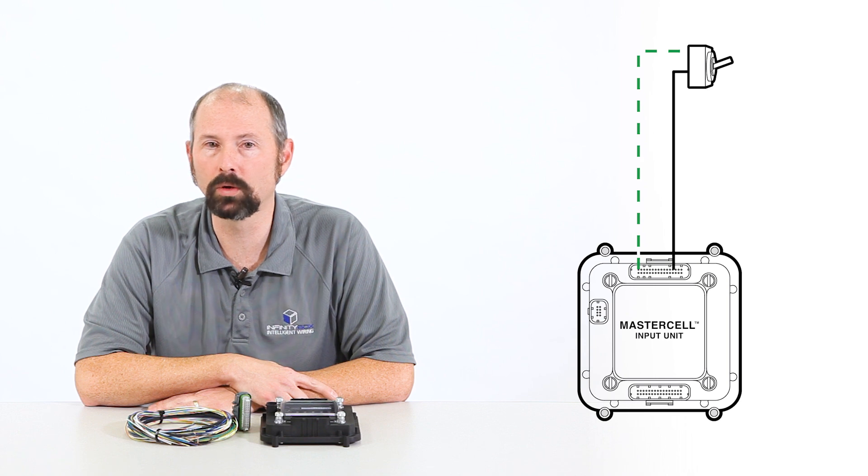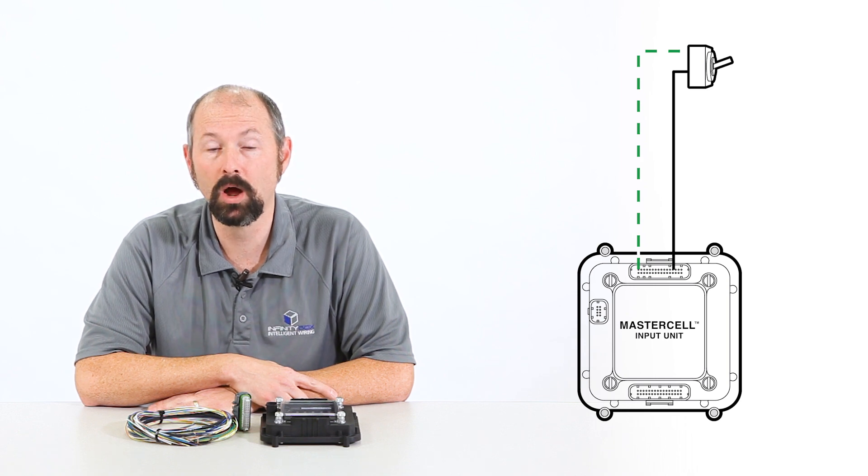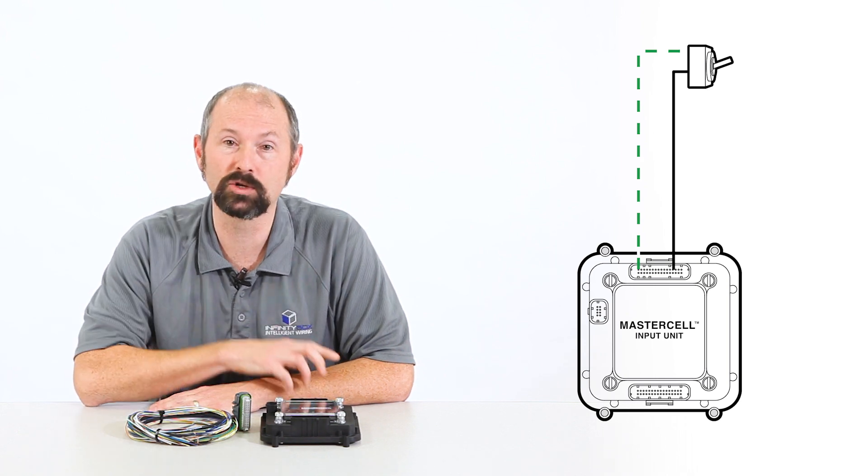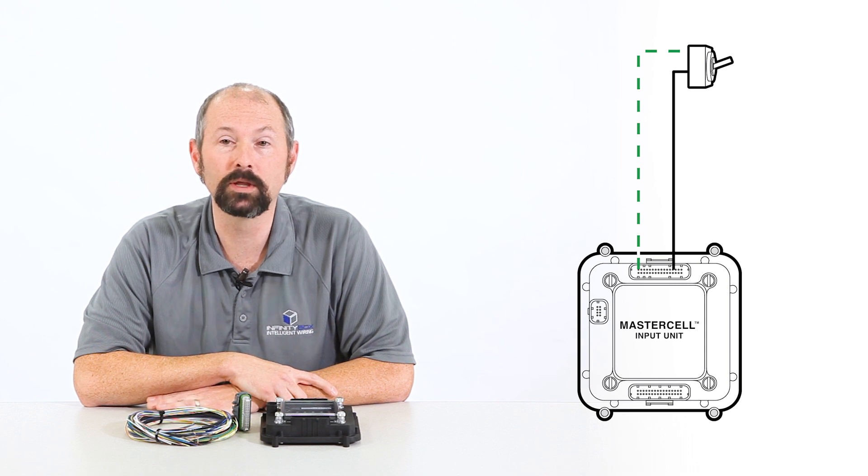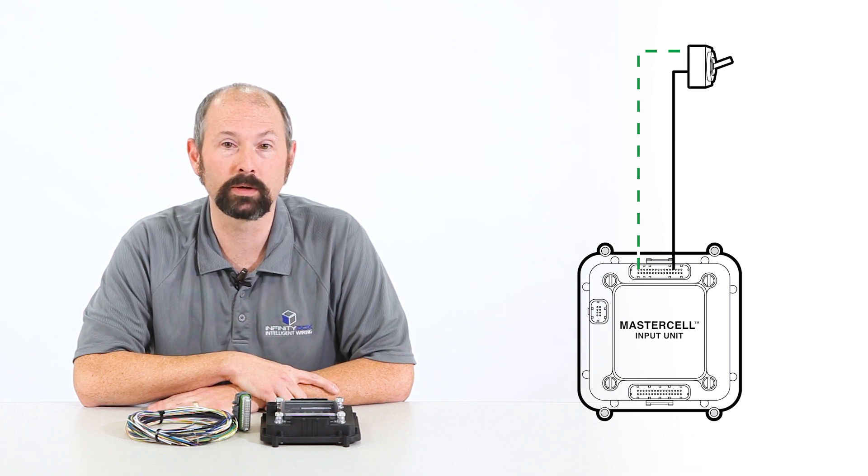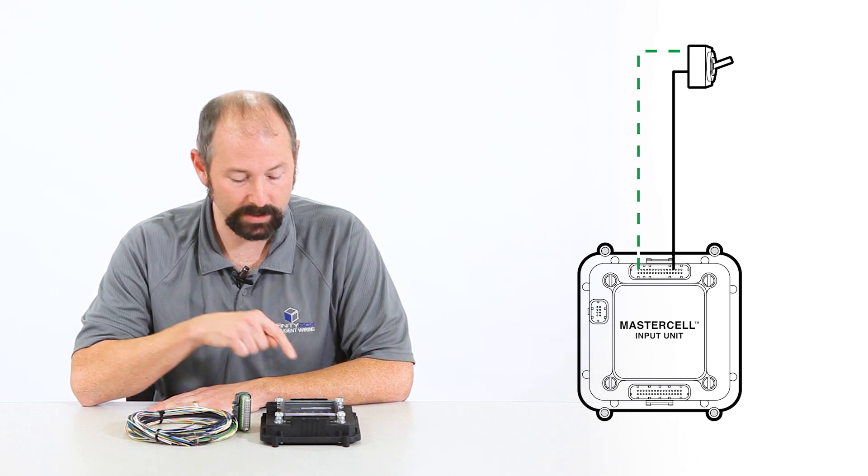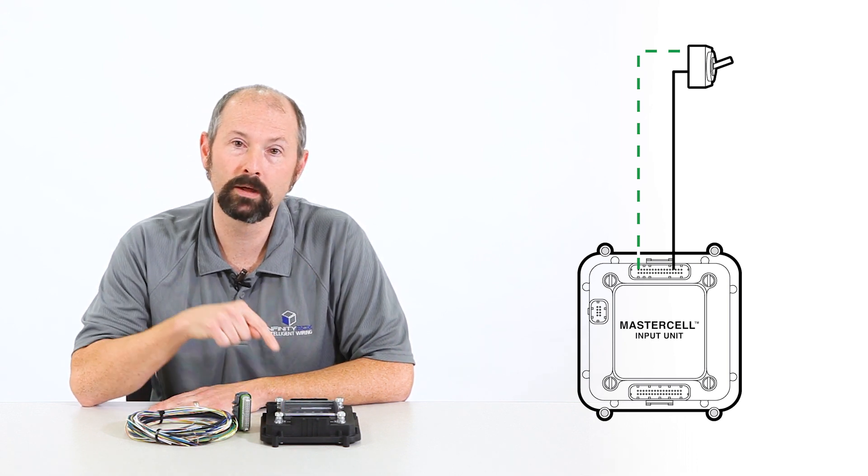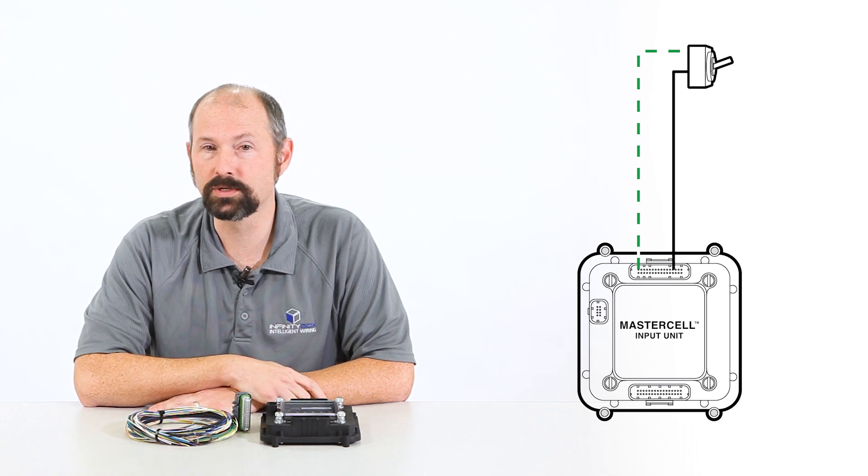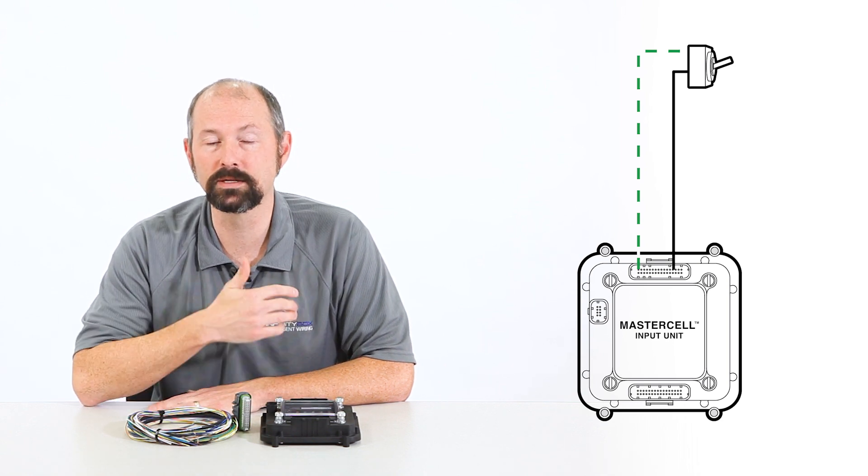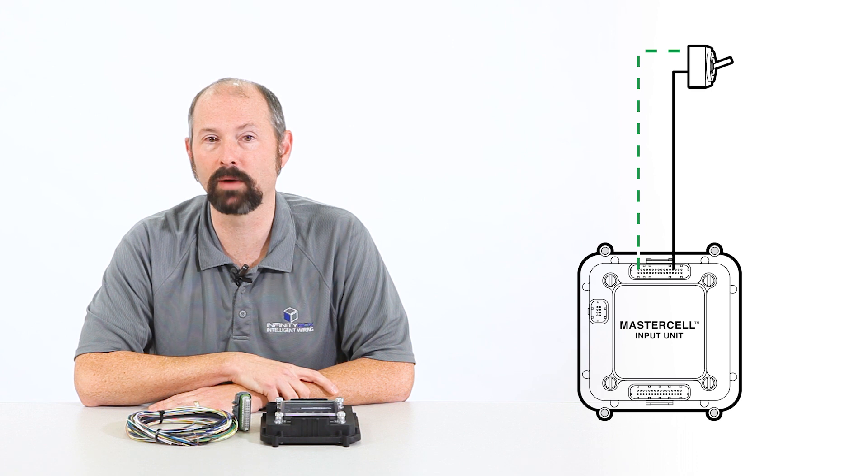I can either ground that locally to the chassis right there at the switch, or our MasterCell harness has ground wires built into it that you can use to bring up to the switch to make the wiring easier. So when I turn on the switch or I close the contacts, I'm connecting the MasterCell input to ground. The MasterCell sees that and then reacts and sends commands out to the rest of the InfinityBox network.